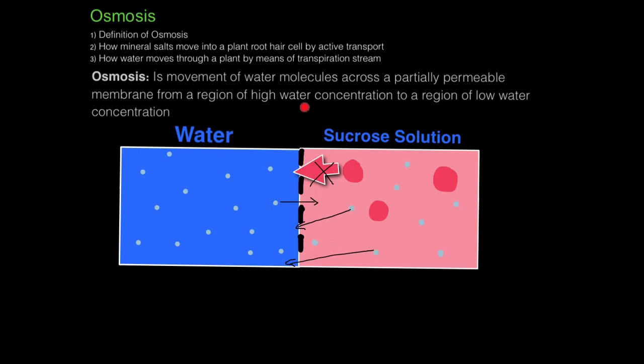This here is the partially permeable membrane. It's basically just a membrane with very tiny holes in it, only allowing really small molecules to travel through, like water. The water molecules can move randomly and they can move back and forth through the permeable membrane, whereas the sucrose solution cannot move through.